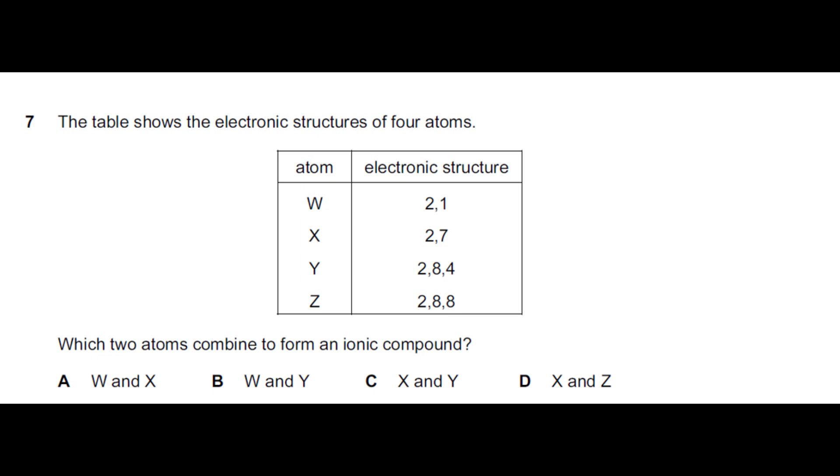The second last question: the table shows electronic structure of four elements W, X, Y and Z. W has electronic configuration of 2,1. It is a metal belonging to first group. X has electronic configuration of 2,7. It is a seventh group element because there are seven electrons in the valence shell.